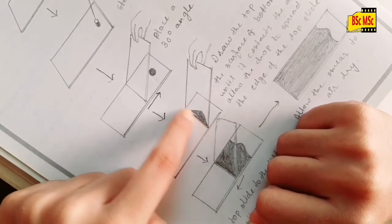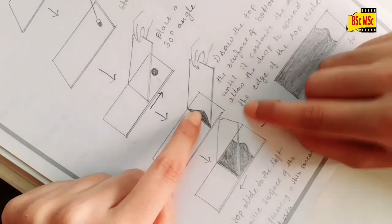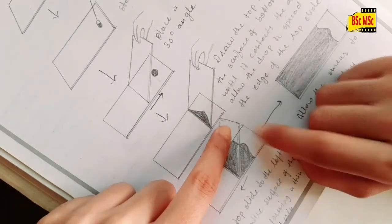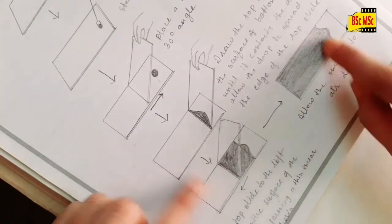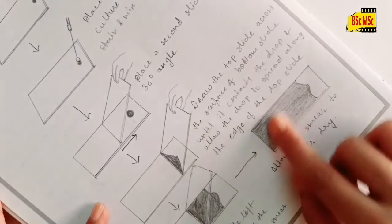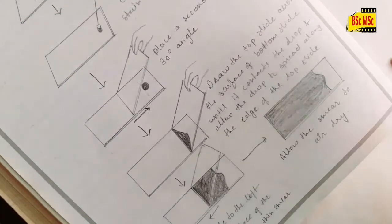Then what you need to do is push this upper slide to the left side and make a thin smear with the stain. After that, allow it to air dry, and then observe under microscope.